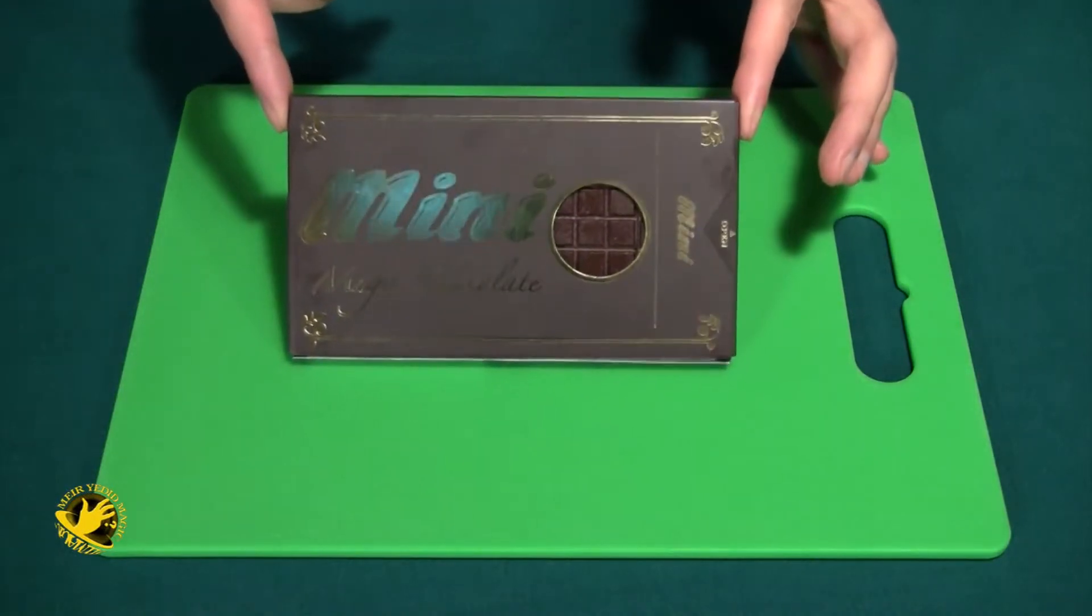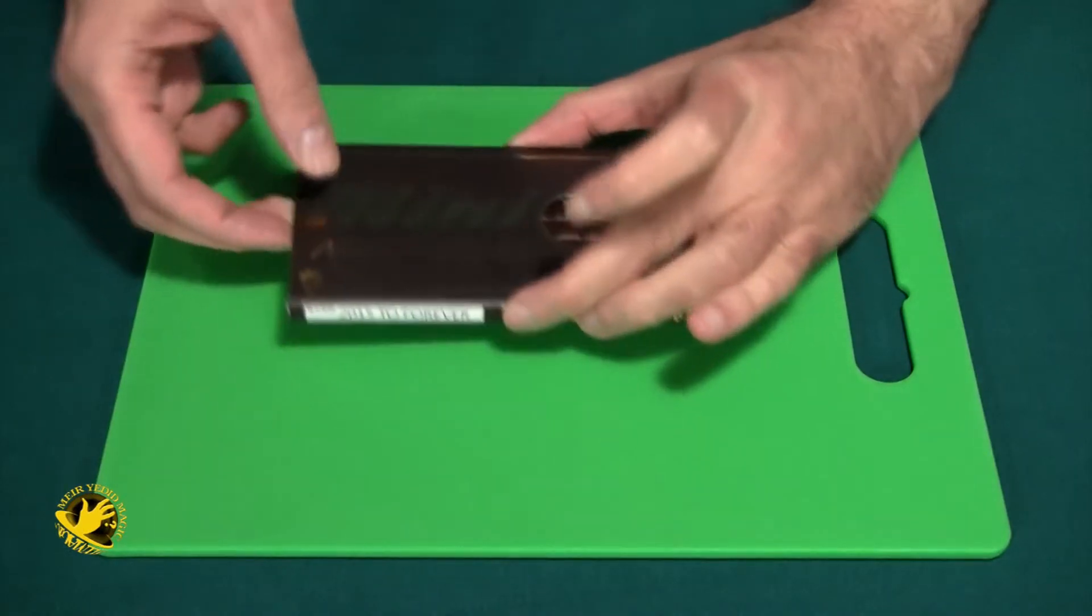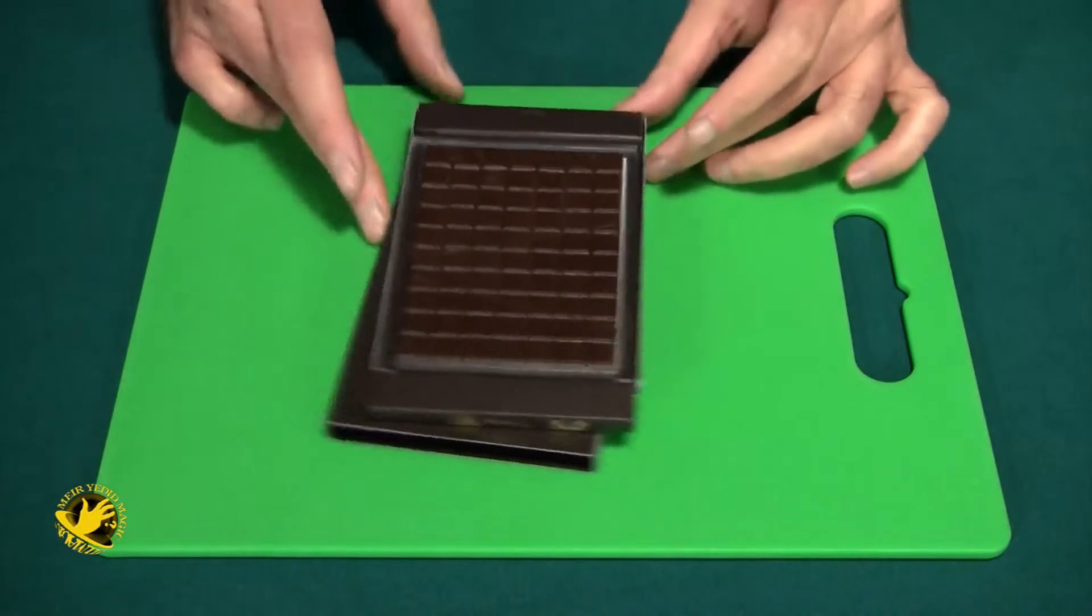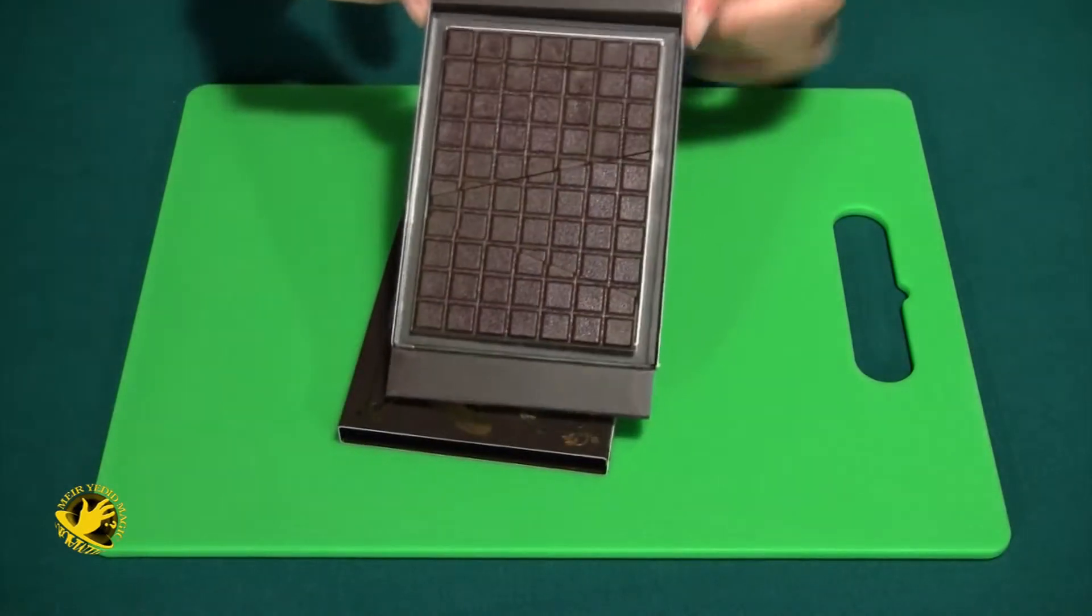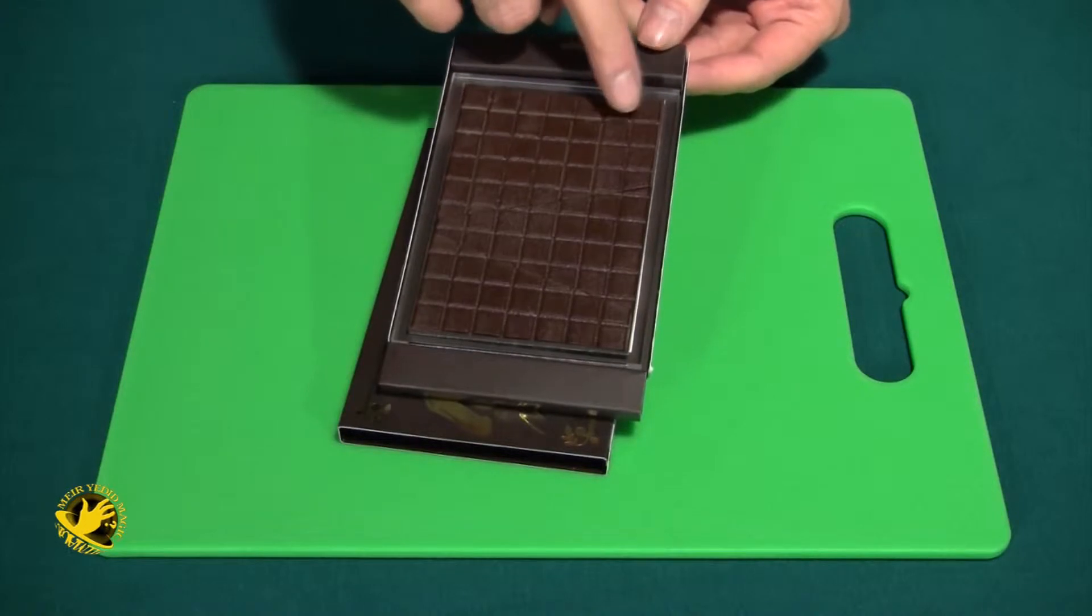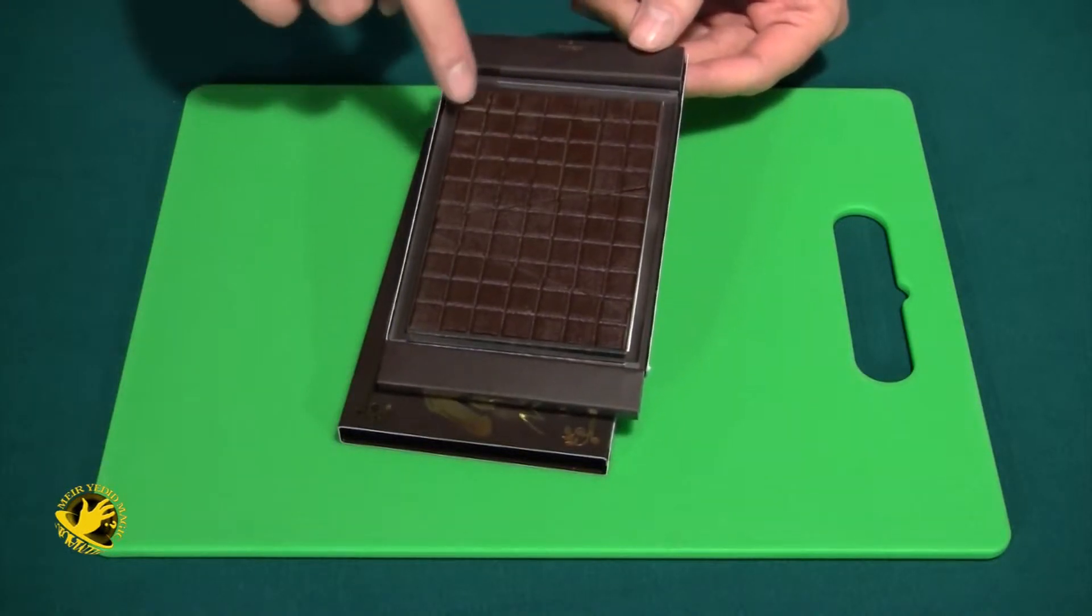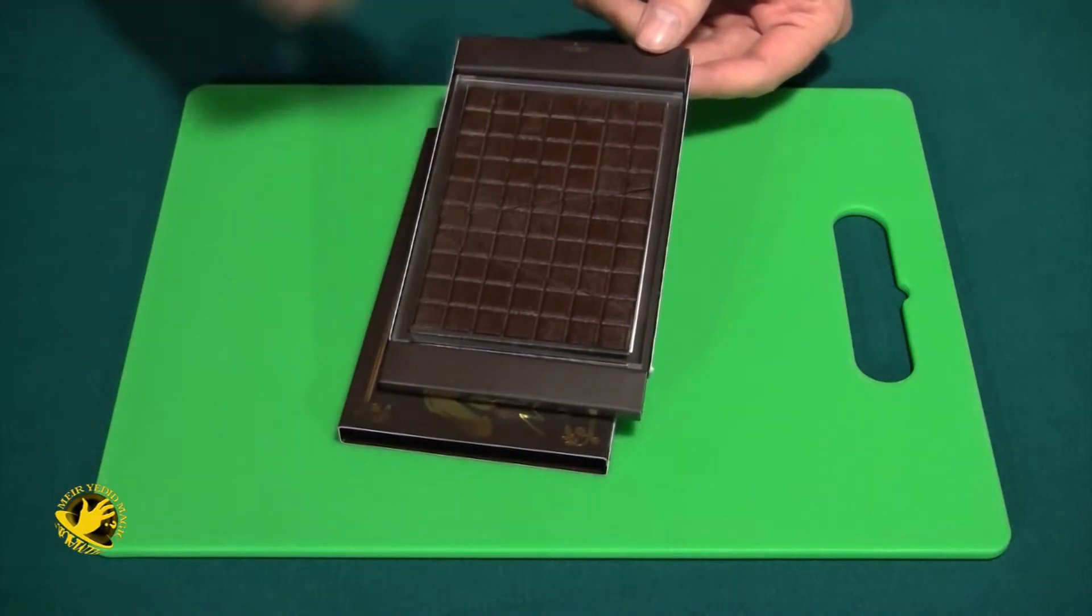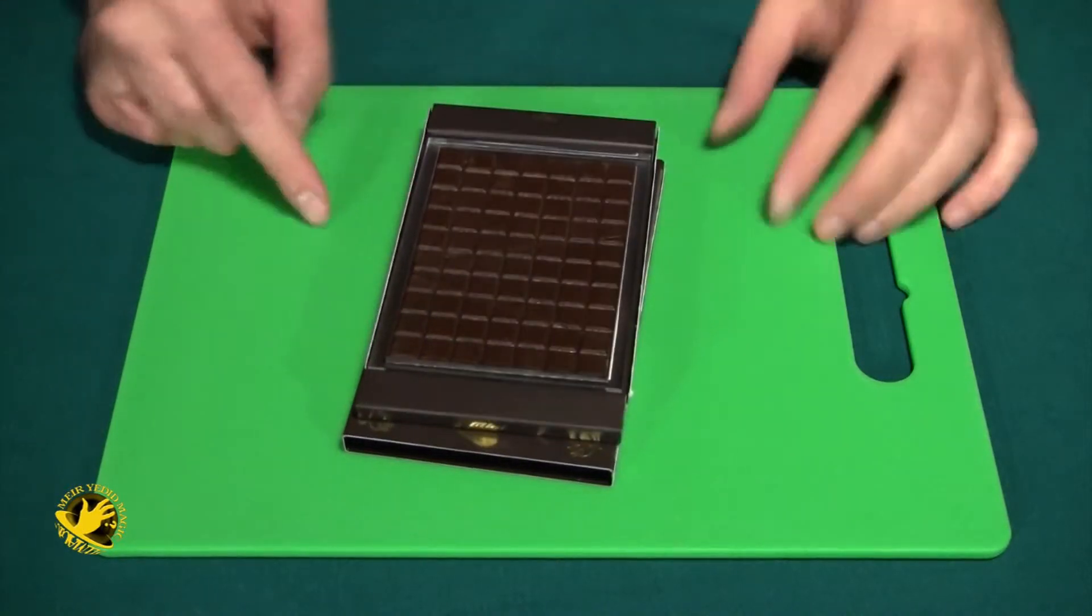And I came up with this idea using these mini chocolates. Mini chocolates are small pieces of chocolate, much smaller than your average size. And I have 1, 2, 3, 4, 5, 6, 7 going this way and 1, 2, 3, 4, 5, 6, 7, 8, 9, 10 going that way. So it's a total of 70 pieces of chocolate.